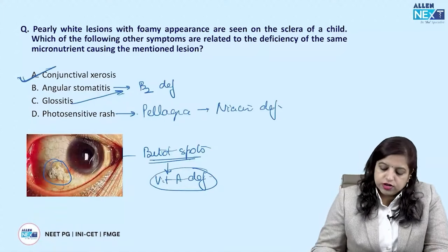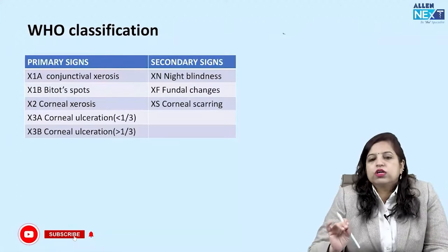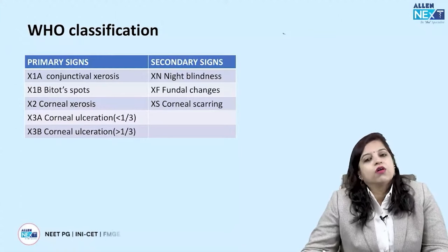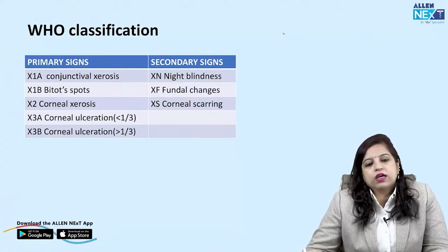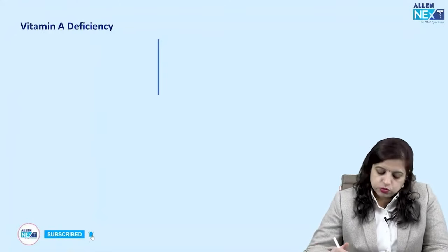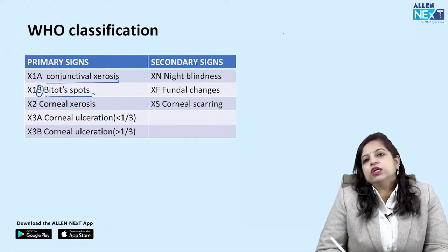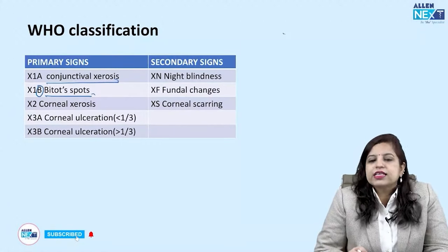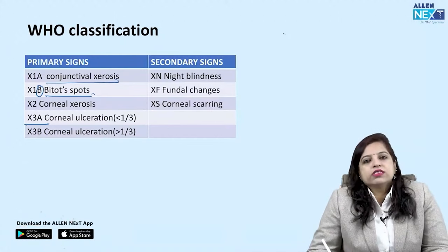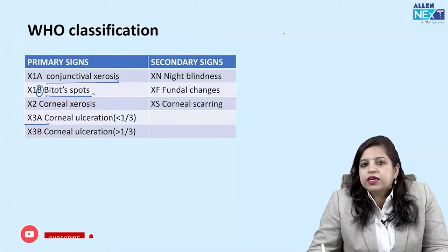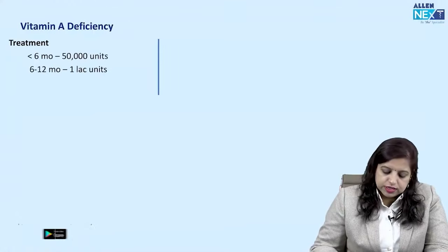WHO classification of vitamin A deficiency: Primary signs: X1A — conjunctival xerosis; X1B — Bitot's spots; X2 — corneal xerosis; X3A — corneal ulceration involving less than one-third of cornea; X3B — more than one-third. Secondary signs: XN — night blindness; XF — fundal changes; XS — corneal scarring.